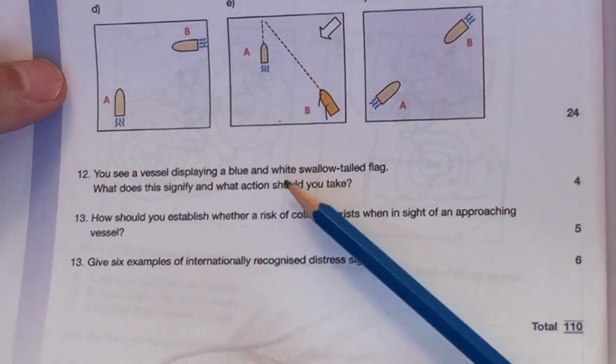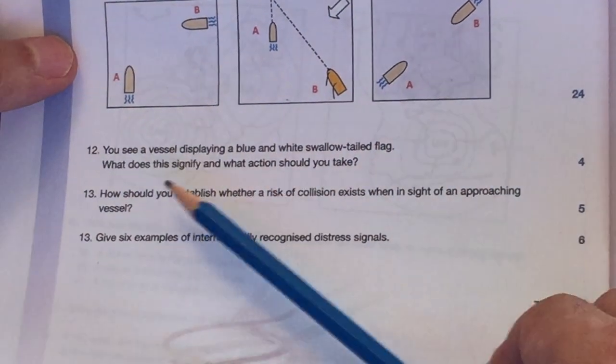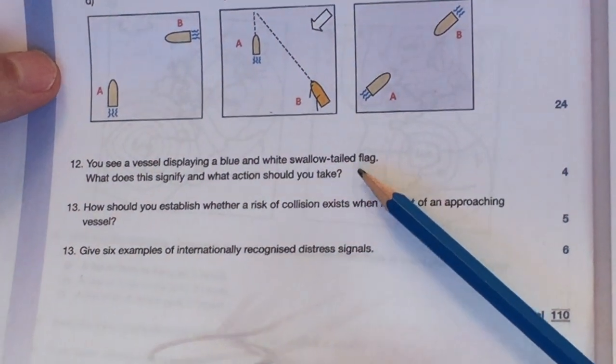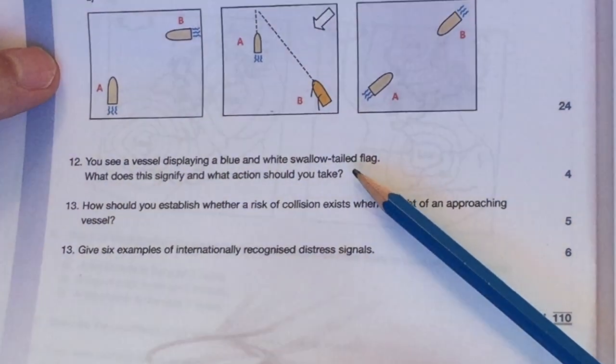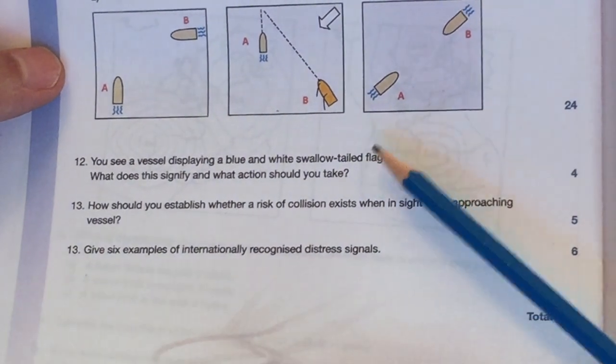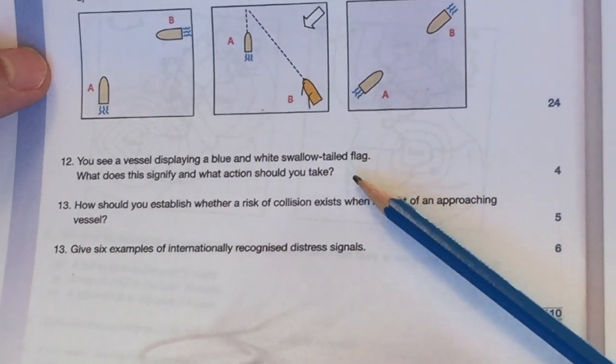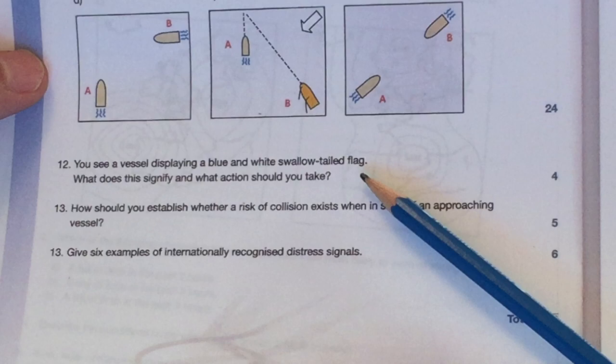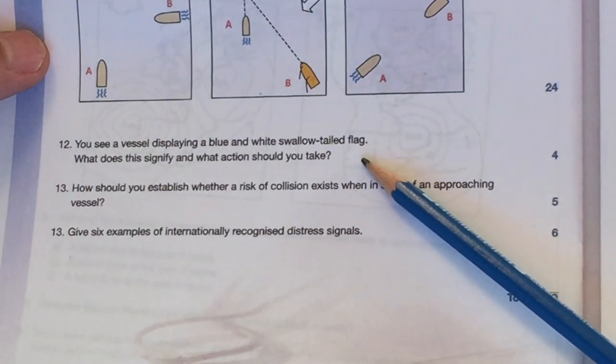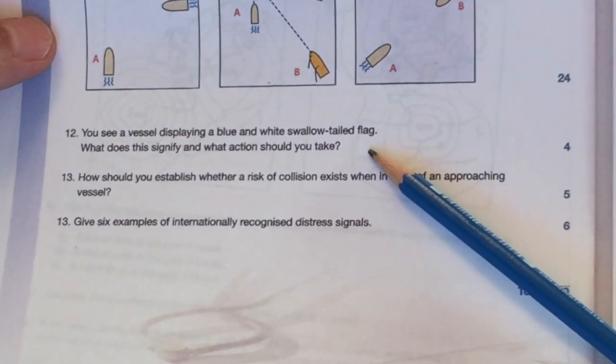You see a vessel displaying a blue and white swallow-tailed flag. What does this signify, and what action would you take? This tells me it's a dive boat with divers on it. The flag flying means there are divers in the water, so I would keep clear at slow speed.